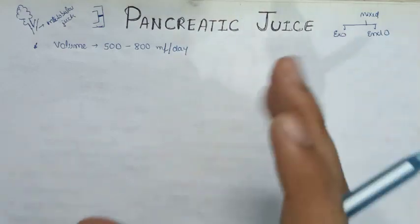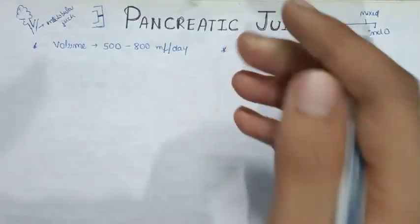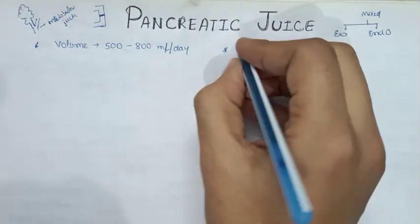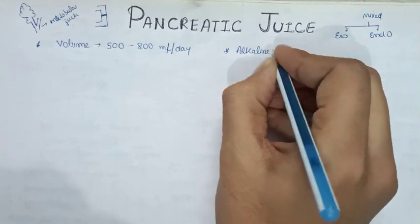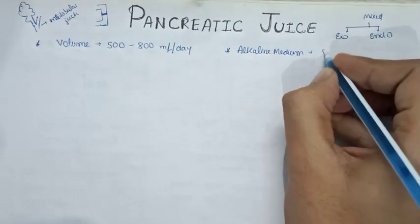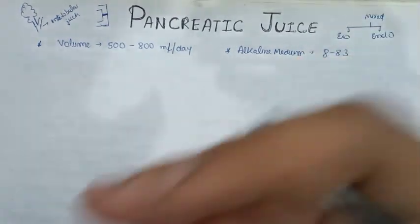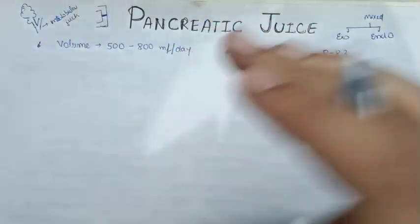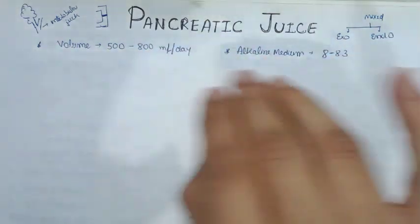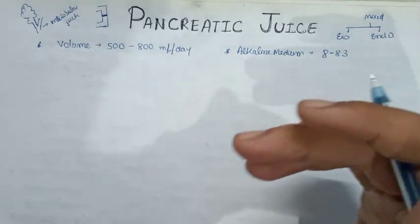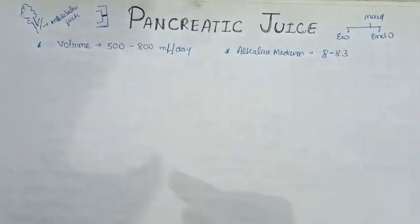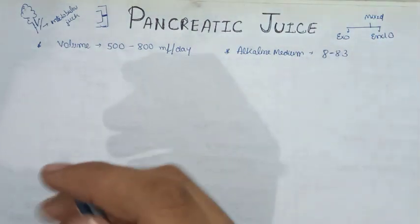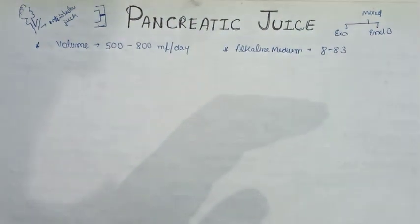Gastric juice volume ranges from 1200 to 1600 ml per day. Pancreatic juice acts in a highly alkaline medium with a pH ranging from 8 to 8.3 — for the body, pH 8 to 9 is considered highly alkaline. The specific gravity of pancreatic juice is around 1.010 to 1.018.